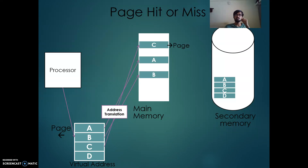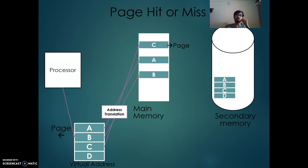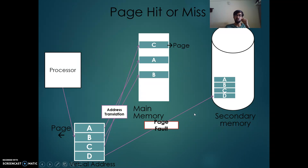To access a page, first the address needs to be translated. But suppose the data is not there in the primary memory — in that case it needs to be accessed from secondary memory, which is called a page fault, and it takes millions of clock cycles.